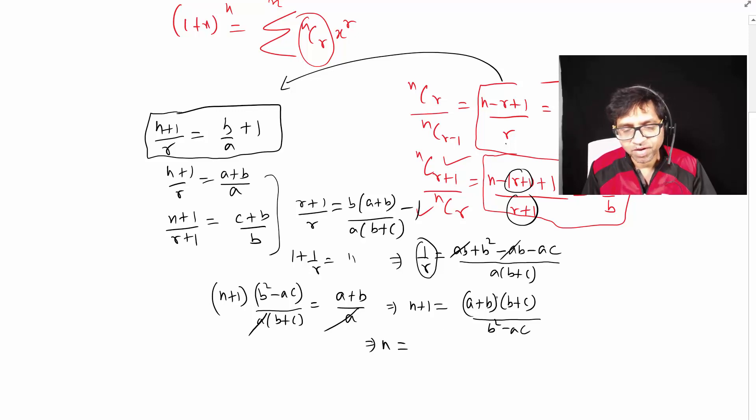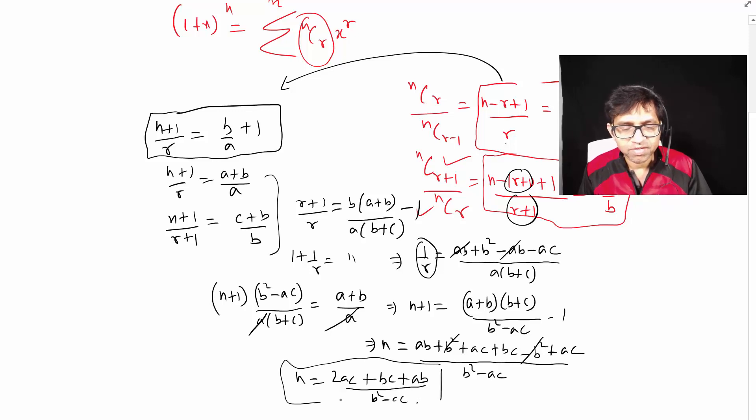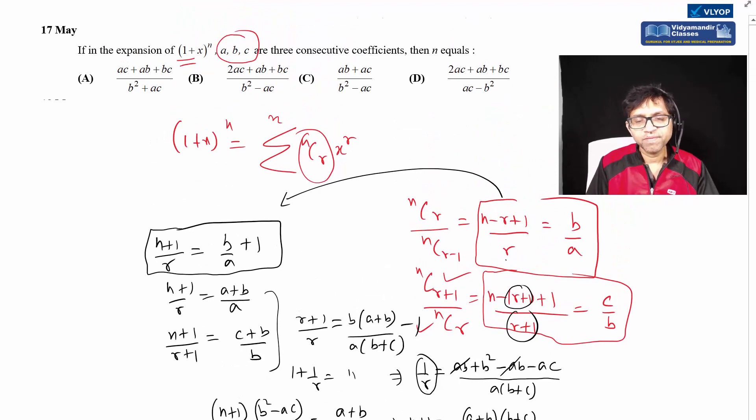When we open this in factorized form, we get AB, B², AC, and BC terms. Taking LCM and simplifying: minus B² plus AC from the denominator. B² cancels with B², leaving 2AC. So we get 2AC plus BC plus AB divided by (B²-AC). The answer is 2AC.